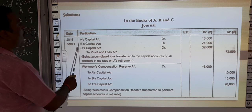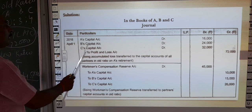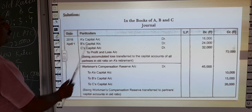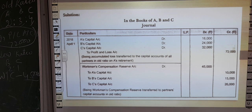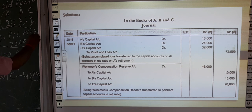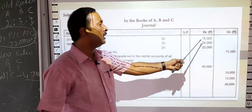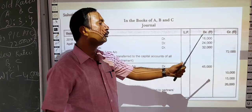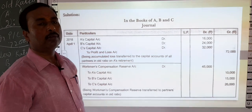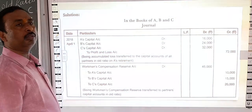A's Capital Account debit, B's Capital Account debit, C's Capital Account debit — to Profit and Loss Account. The 72,000 is distributed in the ratio 2:3:4. So 2/9 of 72,000 = 16,000 for A; 3/9 of 72,000 = 24,000 for B; and 4/9 of 72,000 = 32,000 for C. Thus 72,000 is fully distributed in the 2:3:4 ratio.